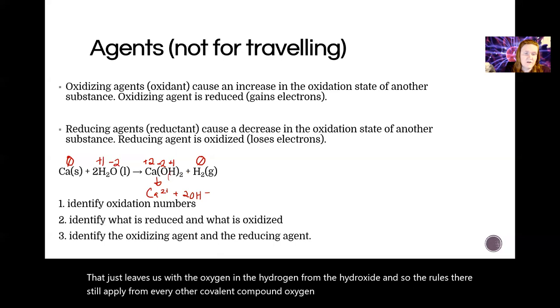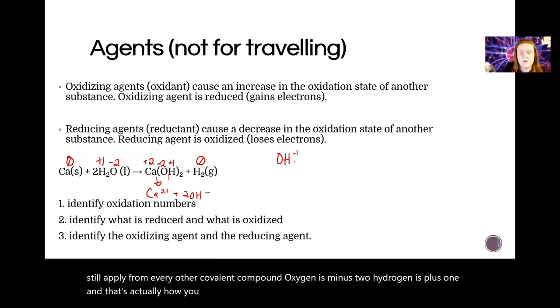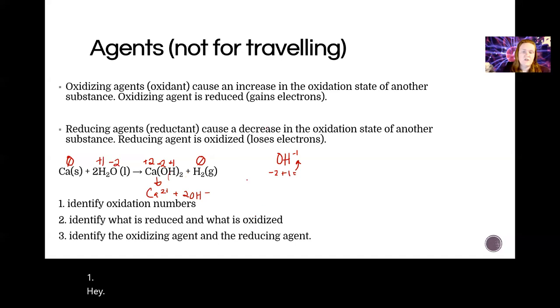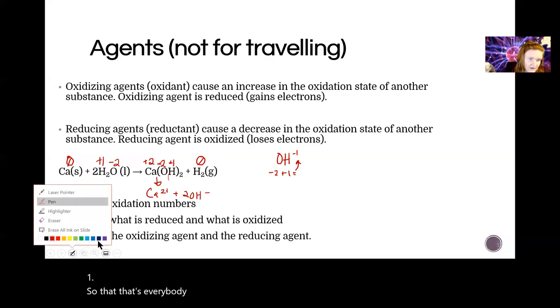That just leaves us with the oxygen and hydrogen from the hydroxide. The rules still apply from every other covalent compound: oxygen is -2, hydrogen is +1, and that's how you get an overall -1 charge.